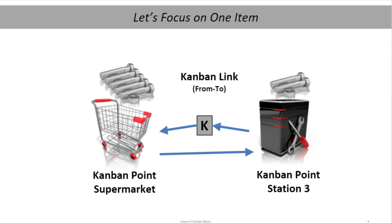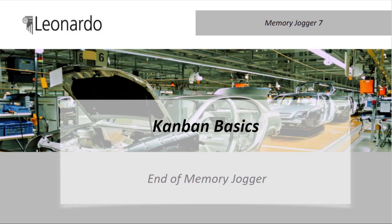Remember, this may be an actual physical card, but not necessarily. It is simply a signal that could take one of several other forms, including a barcode scan, a light, an empty bin, an automated sensor, or even a verbal signal. This concludes this memory jogger on the subject of Kanban basics.